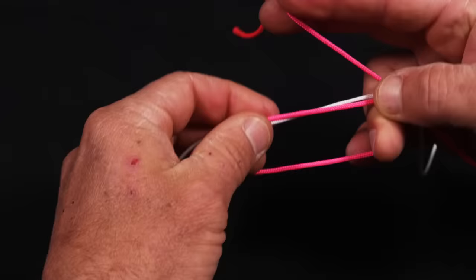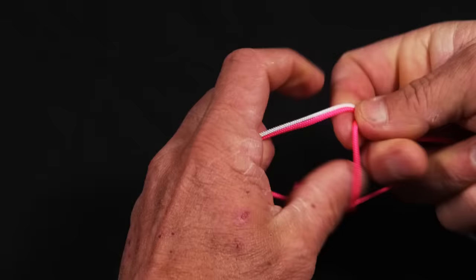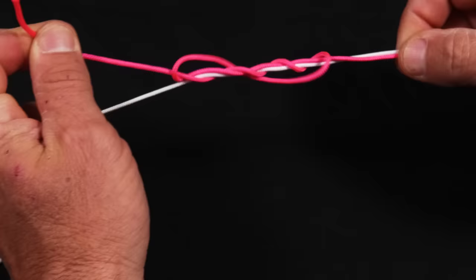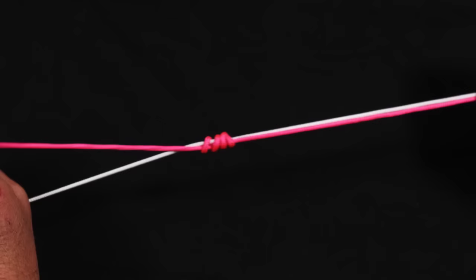And I'm going to hold the two lines just like this. I'm going to roll the pink line, the tag end, one, two, three, four times around. And I'm going to hold just the tag end and I'm going to pull down with the tag end. Exactly like I did with the hook.